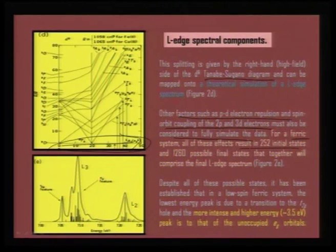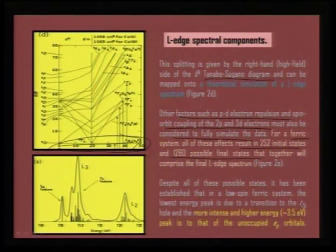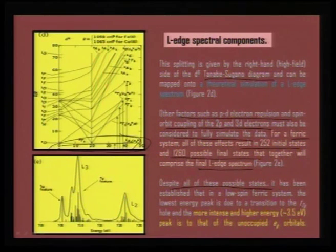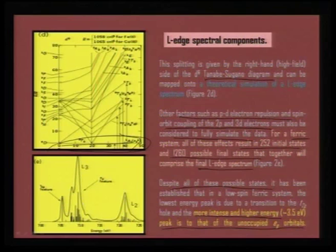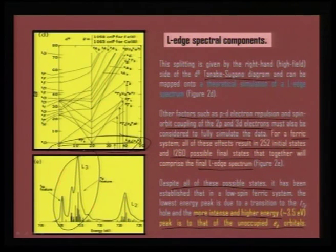For a ferric system, theoretically there are 252 initial states and 1260 possible final states, together giving the final L-edge spectrum. But what you would find here, despite all these possible states, is that it has been established that for the low-spin ferric system the lowest energy peak is due to the transition to the T2G hole, and a more intense higher energy peak is due to the unoccupied EG orbitals. Although there are several states possible, selectively these two states predominate. You can see from the L3 edge that although there are split patterns, you will be able to resolve which one is due to T2G and which one is due to EG.